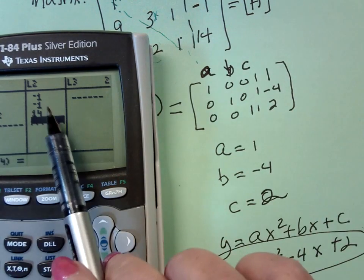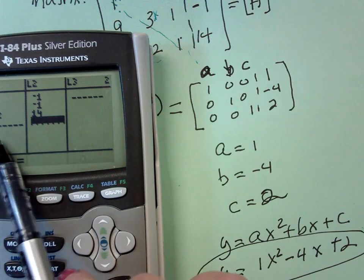Check the coordinate points. 1, negative 1, 3, negative 1, negative 2, 14.